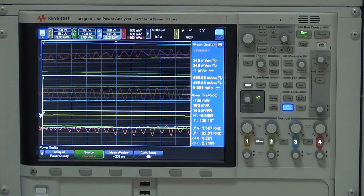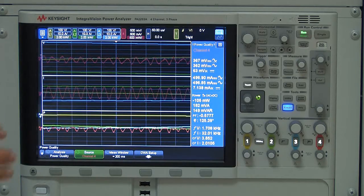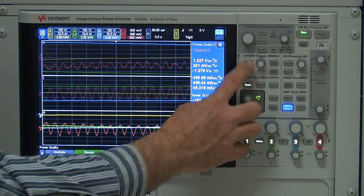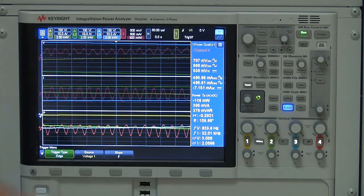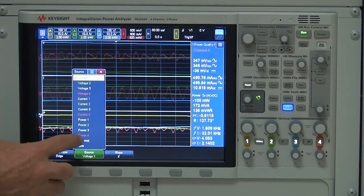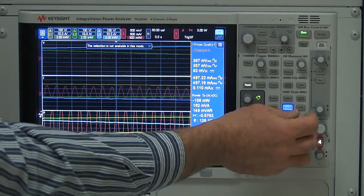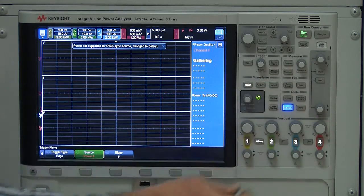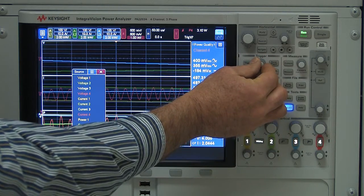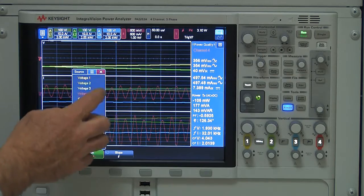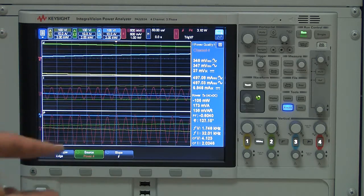One of the things that the PA2203A has is the ability not only to see the power waveform, but you can trigger on the power waveform. So let's change our triggering from voltage 1, which was the nice stable channel. Let's trigger on the power waveform. Once we do that, we can adjust our trigger level to then see the intermittent power levels that are occurring there.